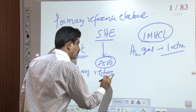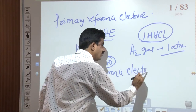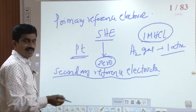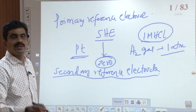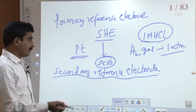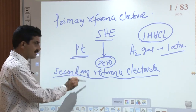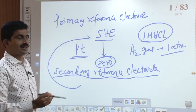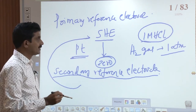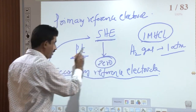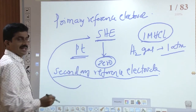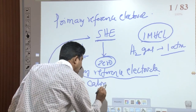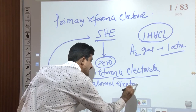Secondary reference electrodes are also reference electrodes — their potential values are constant, and just like the SHE, they can be used to determine electrode potentials. The potential values of secondary reference electrodes have been determined by combining them with the primary reference electrode, the standard hydrogen electrode. There are two widely used secondary reference electrodes: the calomel electrode and the Ag-AgCl electrode.